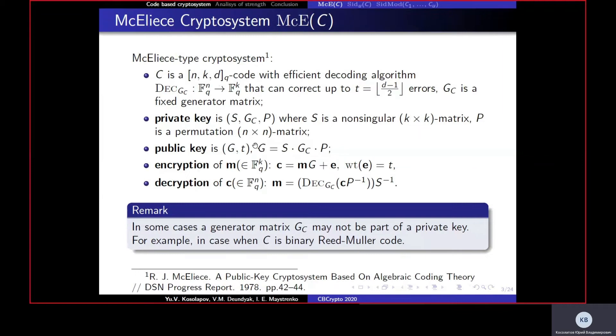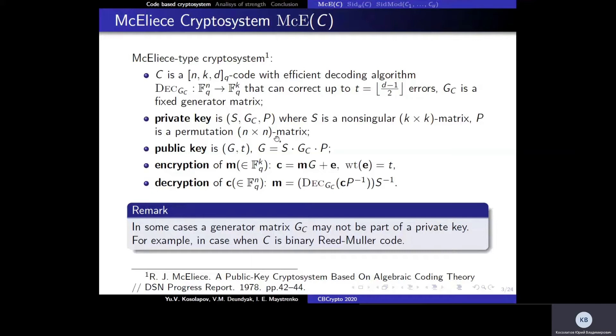Let's consider the McEliece system. The secret key in this system is a triple: a non-singular matrix S, a generator matrix GC for a linear code with a fast decoder, and a permutation matrix P. The public key for this system is a product of these three matrices. In some cases, the generator matrix GC may not be secret — for example, when the code C is a Reed-Muller code.